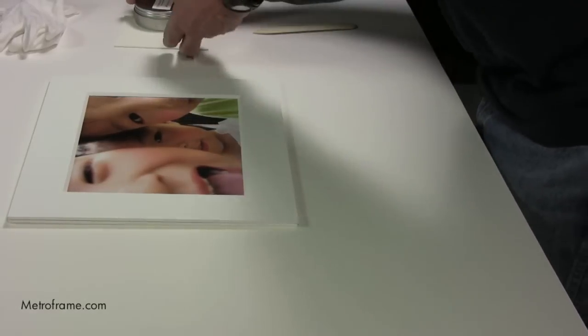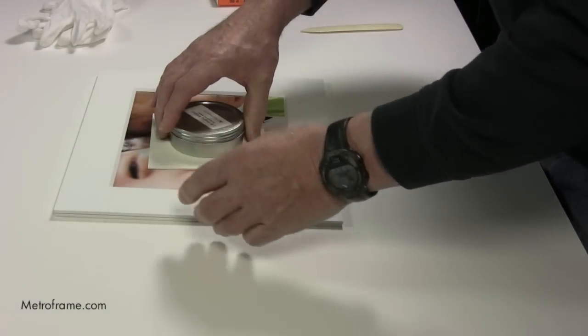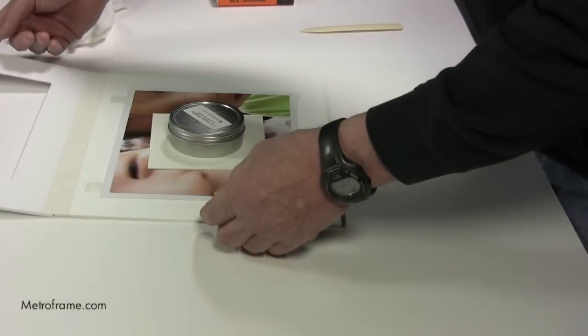Next, place a barrier board and weight on the top of the mat. You are now ready to attach the artwork to the backing board.